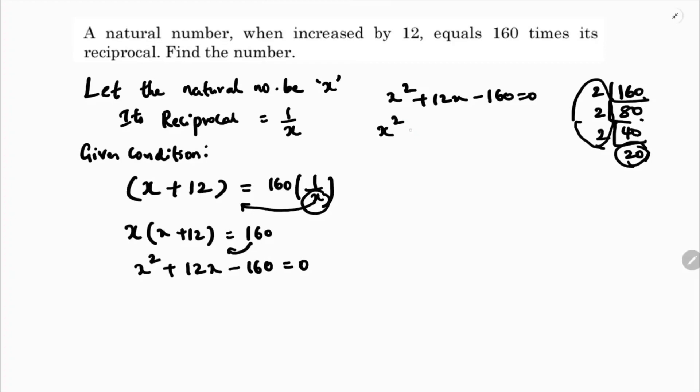So plus 20x minus 8x minus 160 equals 0. Taking x plus 20 common: (x + 20)(x - 8) equals 0. Therefore x plus 20 equals 0 or x minus 8 equals 0, giving x equals minus 20 or x equals 8.